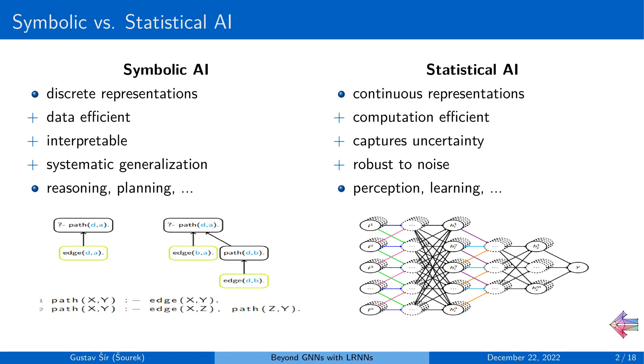So starting very generally, this framework lies in the realm of neural symbolic integration for combining the benefits of symbolic and statistical AI approaches, particularly the discrete representations from symbolic AI, which are commonly data efficient and interpretable. They allow for systematic generalization and are commonly applied in various AI tasks as reasoning or planning.